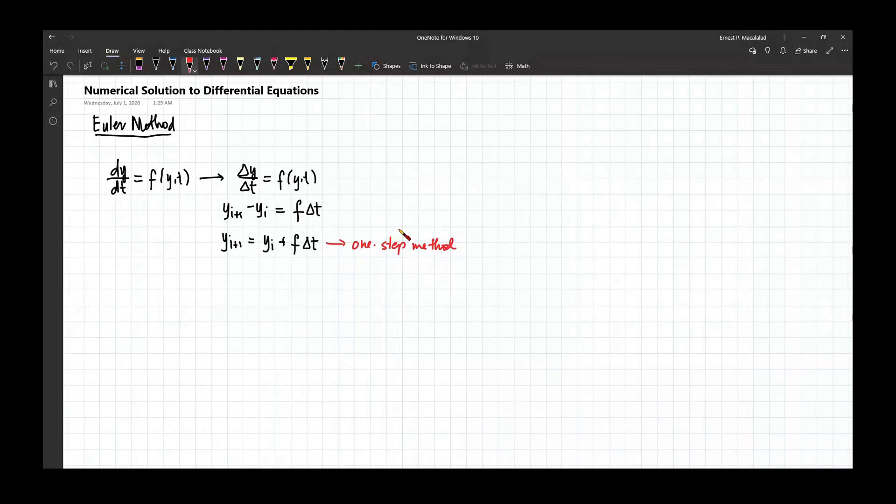So this one-step method is also known as your Runge-Kutta methods. So the Euler method is actually one of the Euler Runge-Kutta method, which we're going to discuss a little bit later.